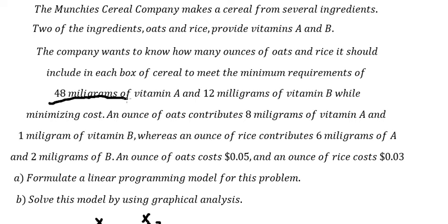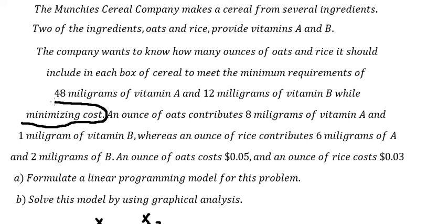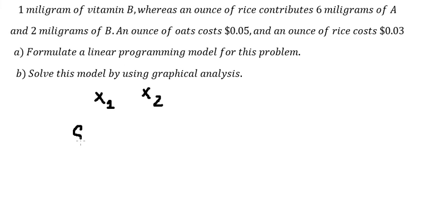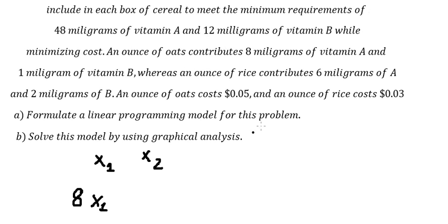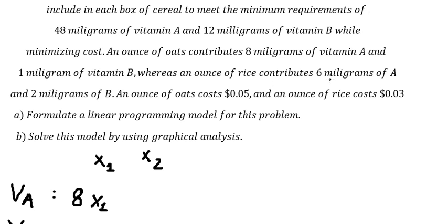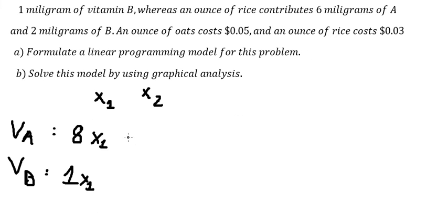We need to provide 48 milligrams of vitamin A and 12 milligrams of vitamin B, and we also want to minimize the cost. One unit of s1 contributes 8 milligrams of vitamin A, so we put 8*s1, and 1 milligram of vitamin B, so we put 1*s1. For s2, that is about 6 milligrams of vitamin A, so we put 6*s2, and 2 milligrams of vitamin B, so we put 2*s2.